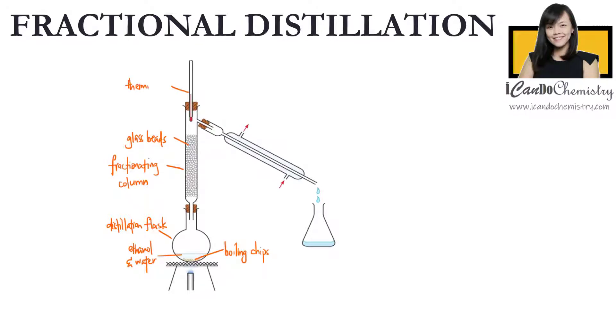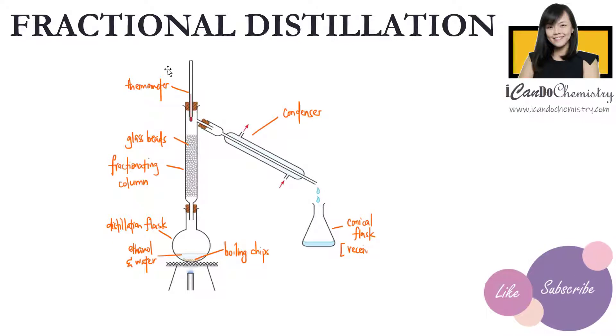We have a thermometer at the top of the fractionating column, we have a condenser, and we have a conical flask here, which we call a receiver to collect the pure distillate.